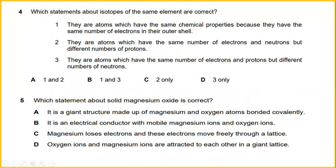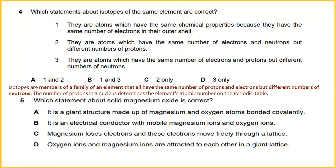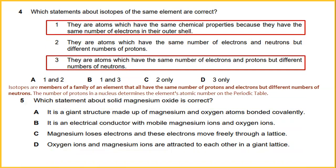Which statement about isotopes of the same elements are correct? Isotopes are members of a family of an element that all have the same number of protons and electrons but different number of neutrons. The number of protons in a nucleus determines the element's atomic number on the periodic table. Number one says they are atoms which have the same chemical properties because they have the same number of electrons in the outer shell. And number three, they are atoms which have the same number of electrons and protons but different numbers of neutrons. The answer would be one and three.